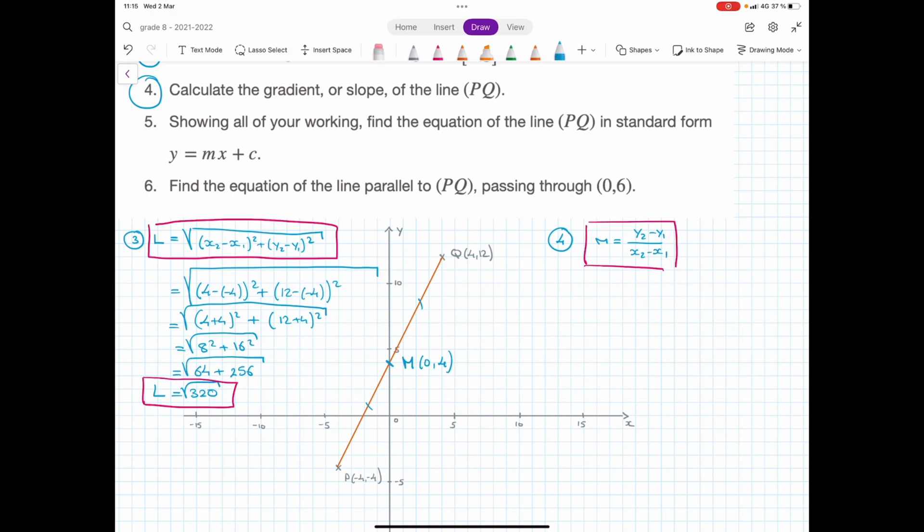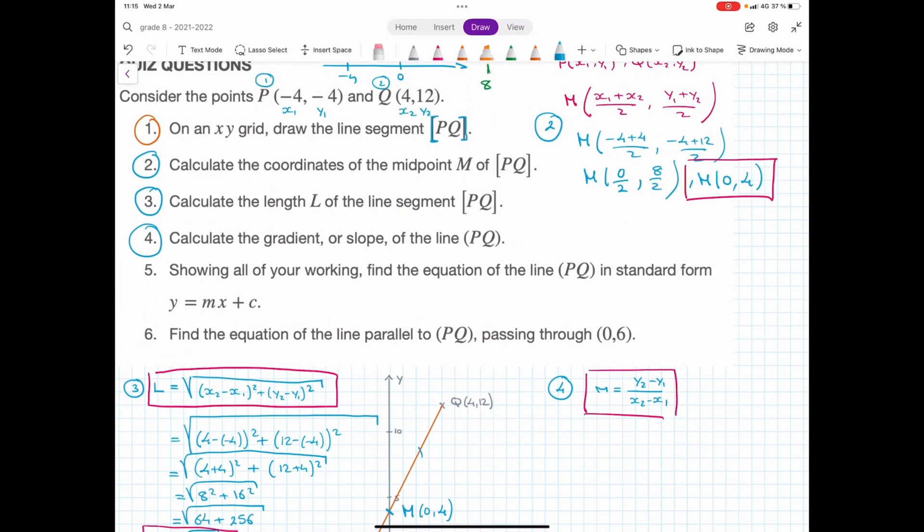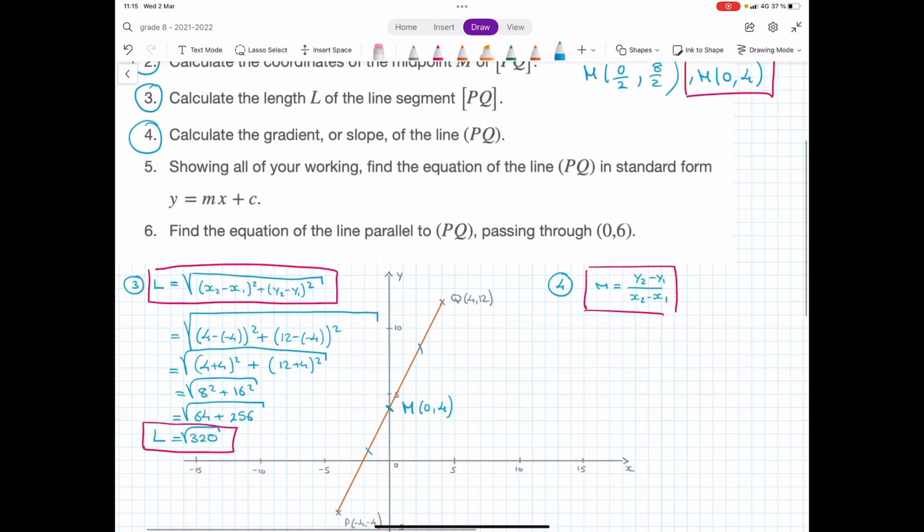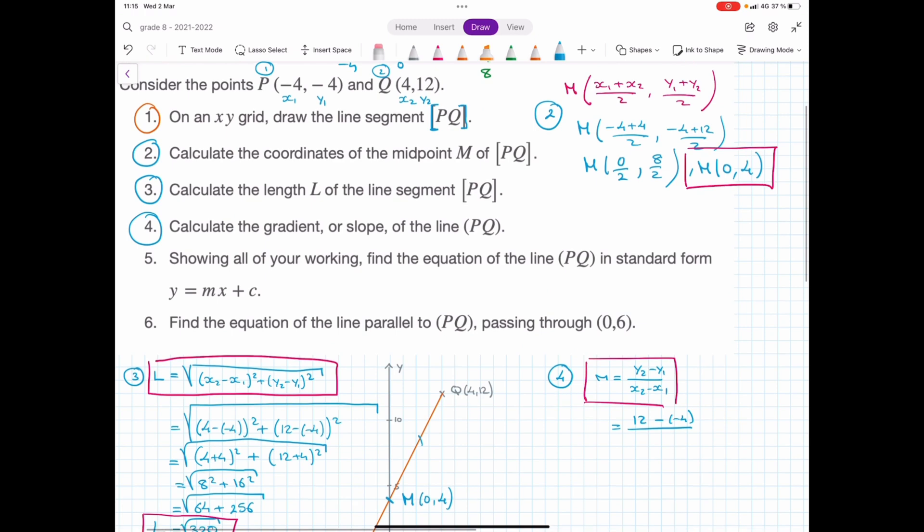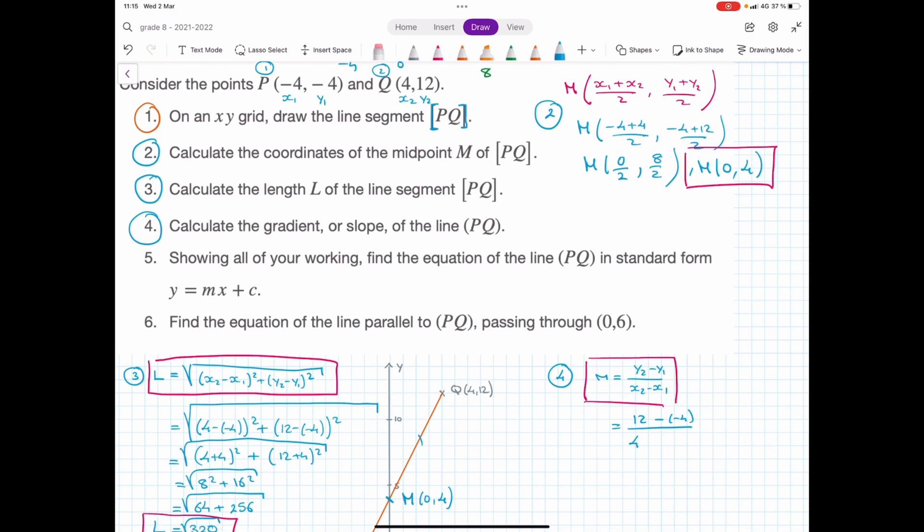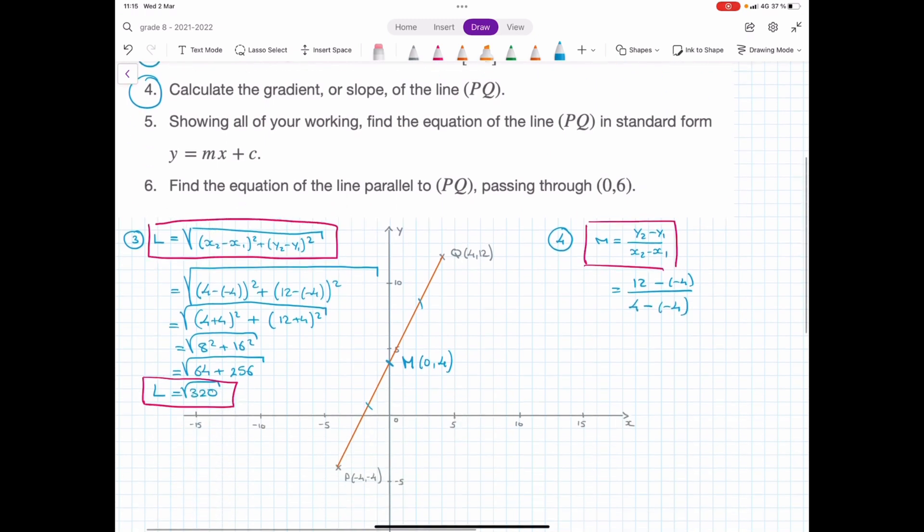Let's go ahead. Y2, I mean, it doesn't change, right? Y2 is still 12. Y1 is negative 4. So if I plug those in, that's 12 minus negative 4 over x2, which is 4, minus negative 4. Careful of sign errors again. You're subtracting something negative. That means adding. So I have 12 plus 4 over 4 plus 4. That's 16 over 8, which hopefully you're all comfortable in seeing. That's M equals to 2. 16 divided by 8 is 2. So that's our gradient.